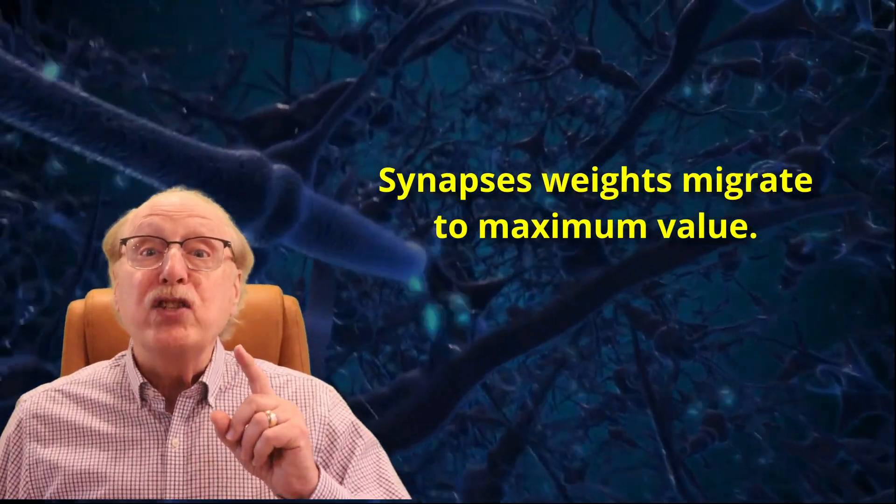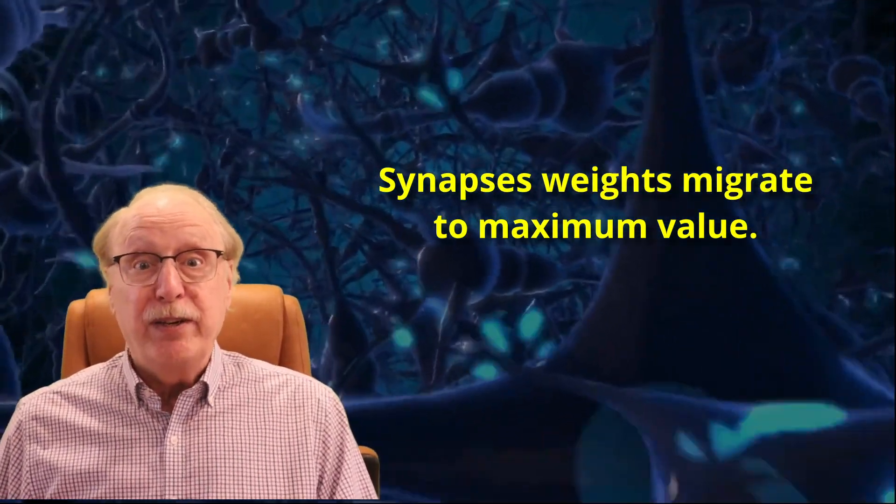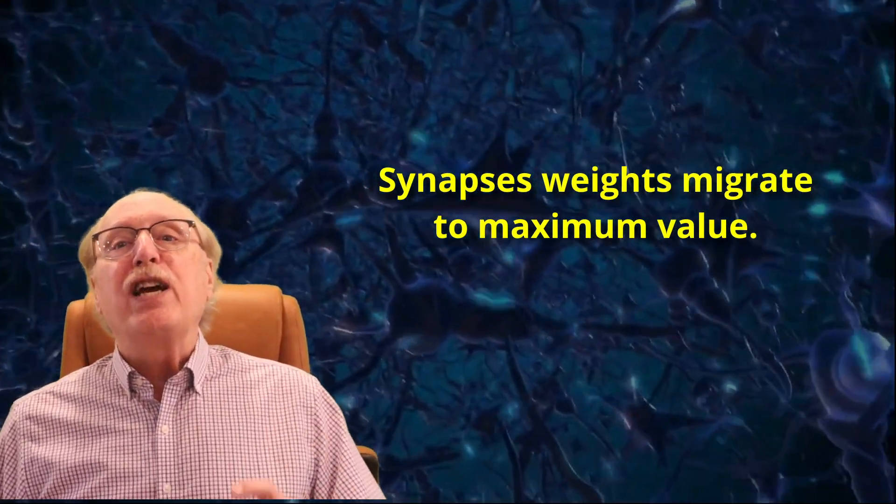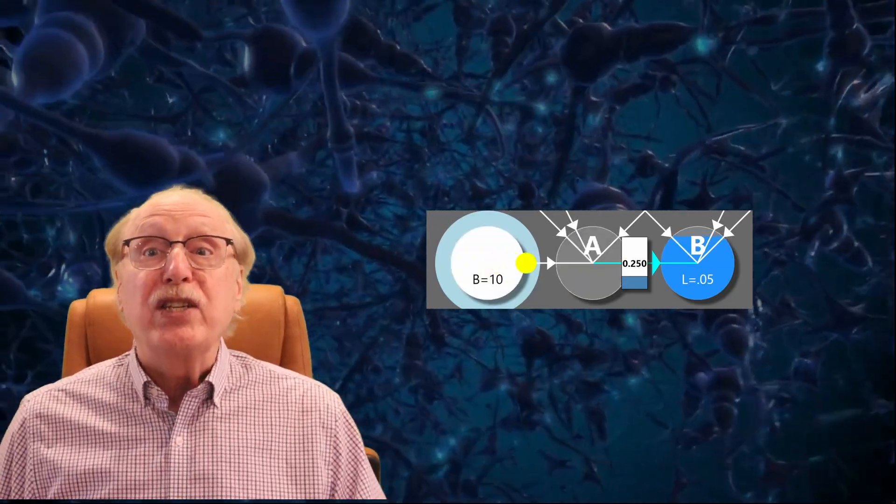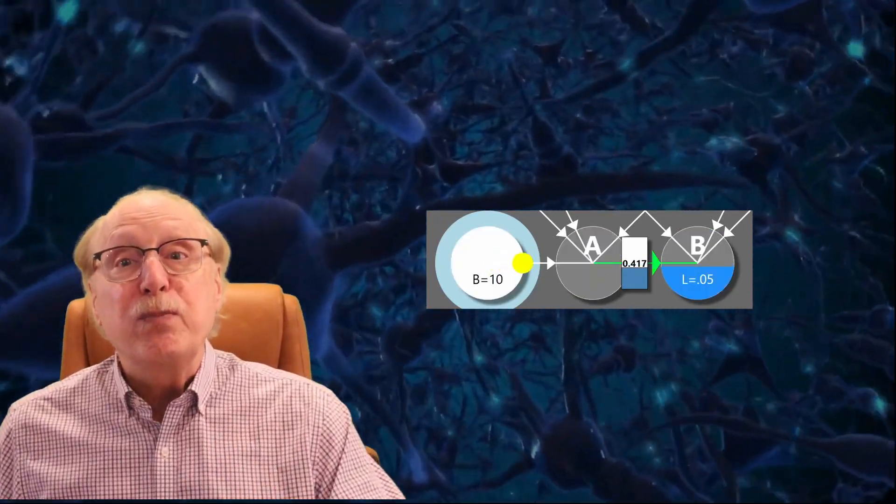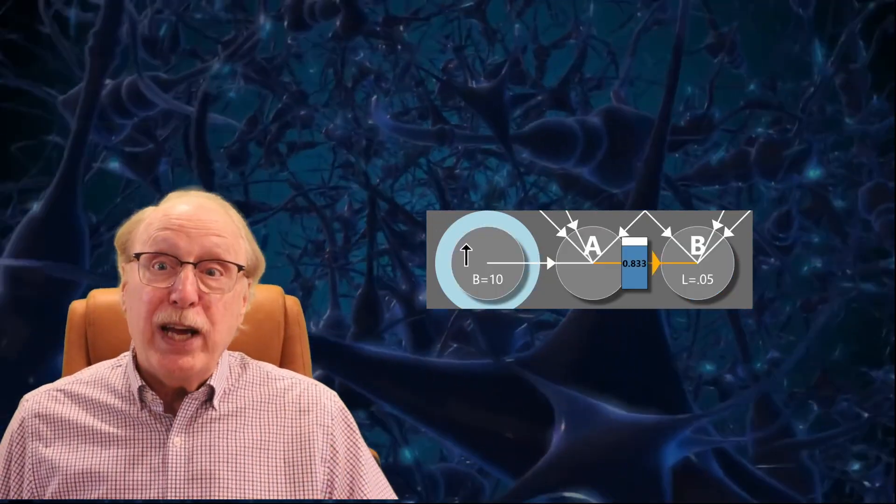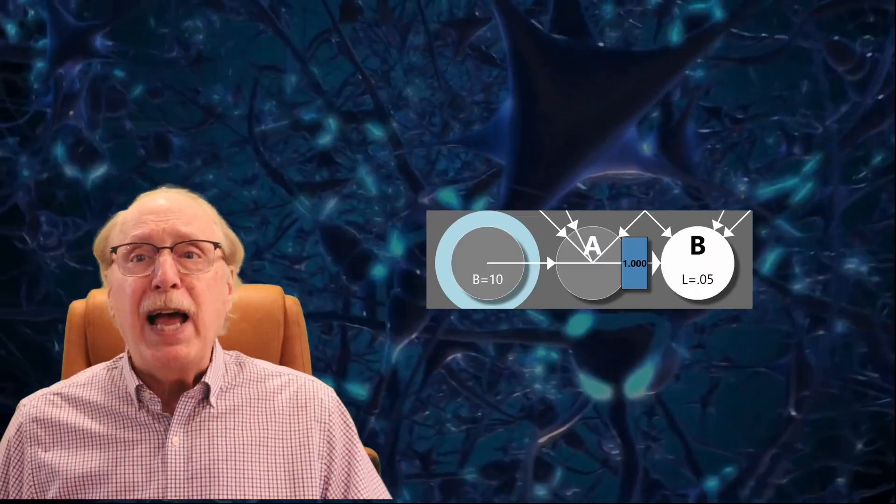If a synapse weight is ever great enough that neuron A could cause neuron B to fire, even if it takes multiple spikes, the synapse weight will rapidly reach its maximum value as shown here. This also means that your brain can only set a synapse weight to approach its minimum or maximum values. So although a synapse weight is often considered a real number, it can really only take on a very limited number of distinct values.